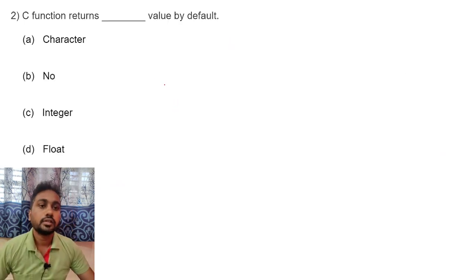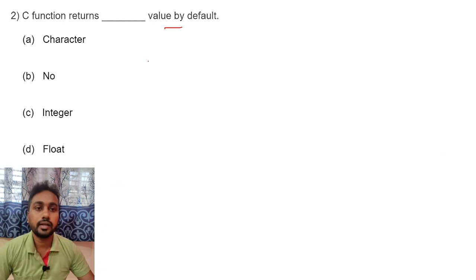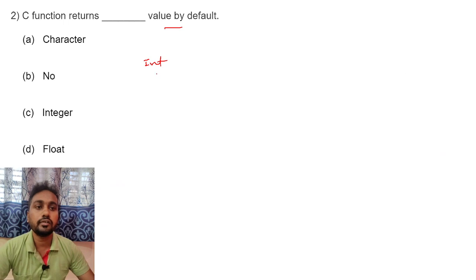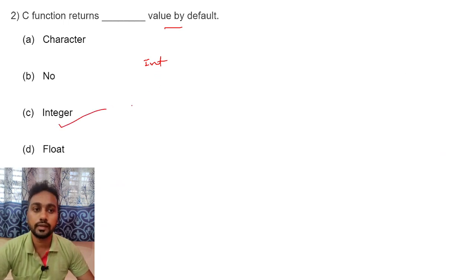Next question: C function returns what value by default? A C function always returns an int value by default. Int means integer value. Option C is the right answer.